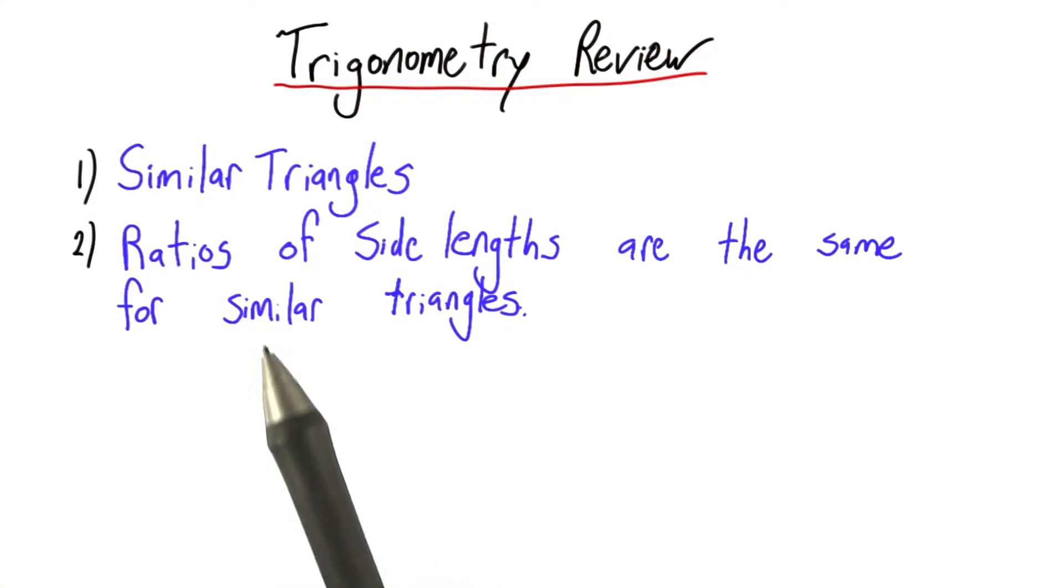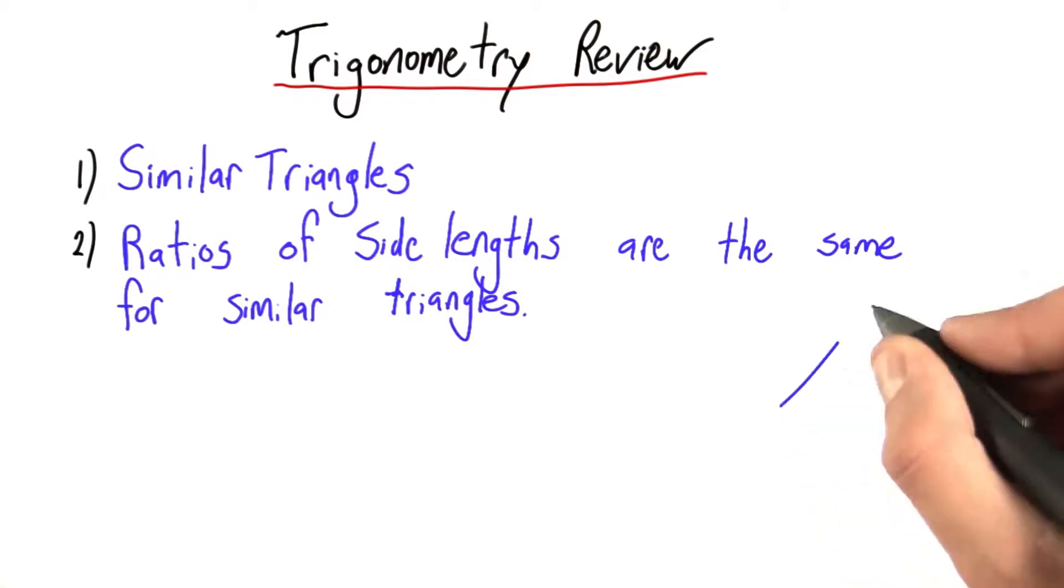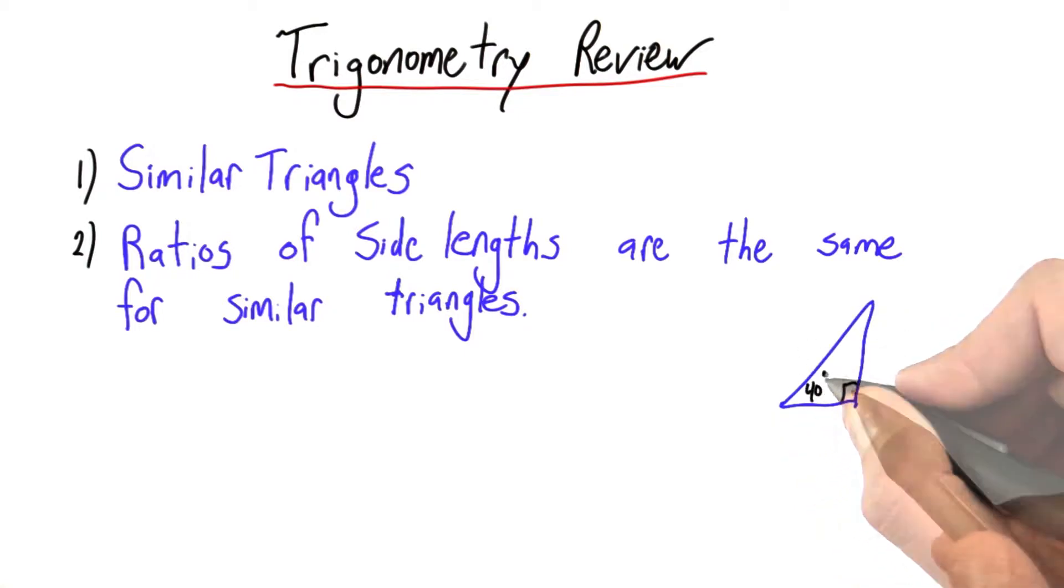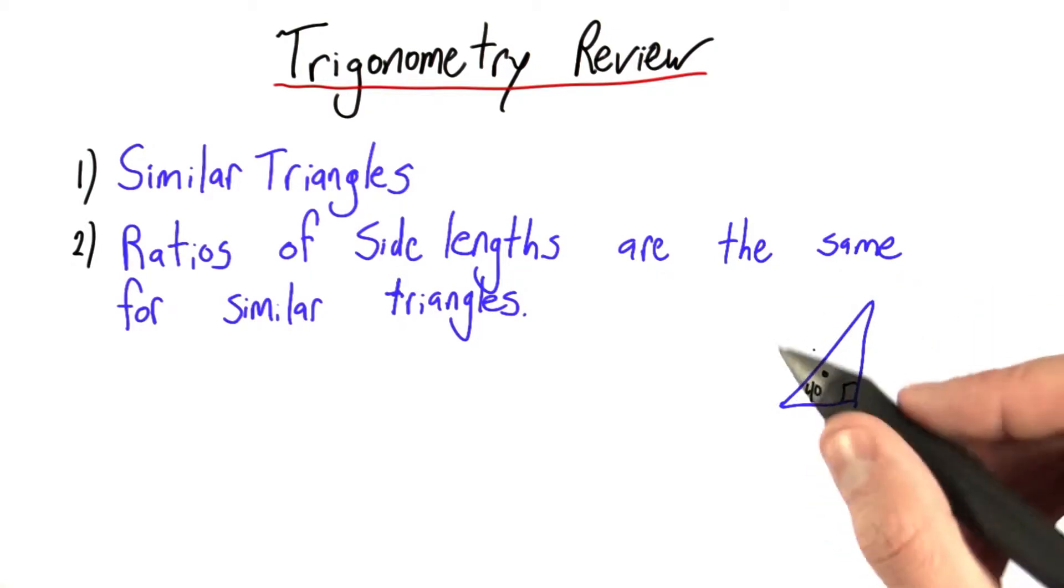One really important property is that the ratio of side lengths are the same for two similar triangles. What this means is that if I have a right triangle with a 40 degree angle here, I can immediately tell you the ratio of this side to that side, or this one to that one, and that's a very powerful tool.